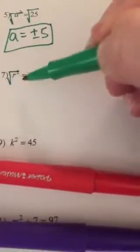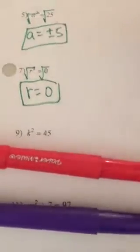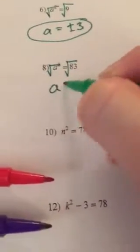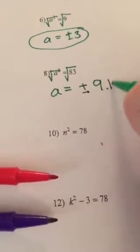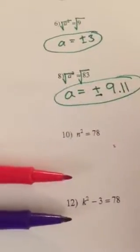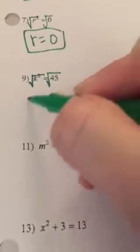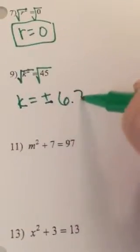r squared is by itself, square root it: r equals — you don't need to write plus or minus 0, but if you put it, that's fine. Number eight: a squared is by itself, square root both sides, a equals plus or minus 9.11. On number nine, k squared is by itself, so we square root both sides: k equals plus or minus 6.71.